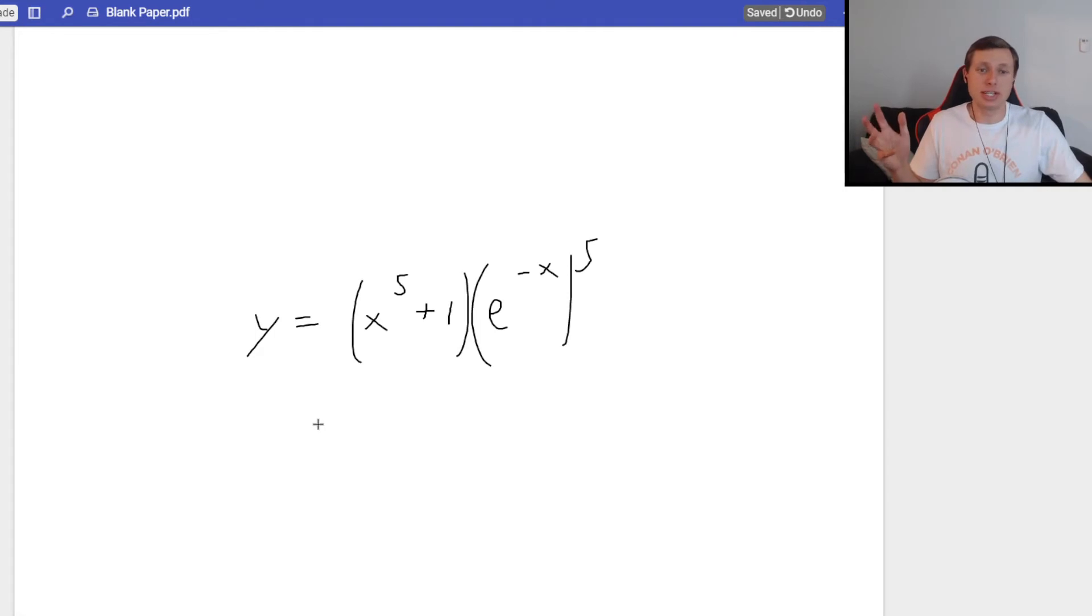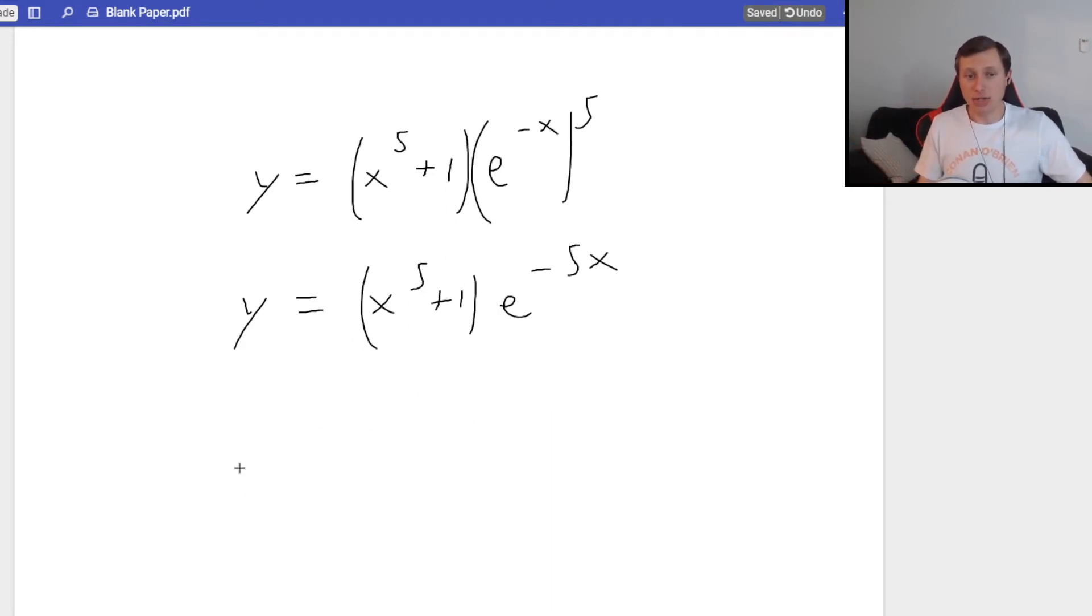Okay, so the first thing I want to say is I would rewrite this just slightly. You would keep the x to the fifth plus 1. You're not going to touch that. We are going to use a product rule here. E to the negative x to the fifth. Remember what we said earlier. When you have a power raised to another power, what do you do? You multiply. So it's e to the negative 5x power now. And now it's a lot more possible.